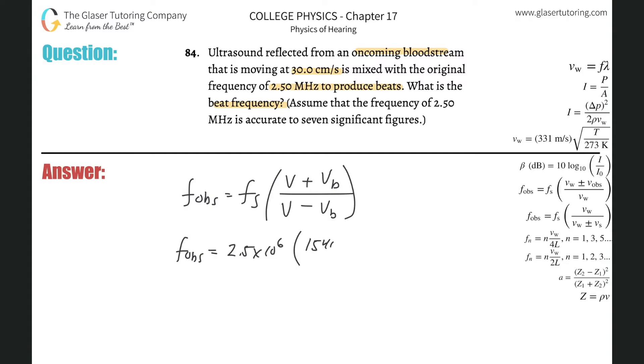Plus then the velocity of the blood, which they told us is 30 centimeters per second, but we need that in meters per second, so that would be 0.3 meters per second. Then divided by 1540 minus 0.3, and plug this on into the calculator.